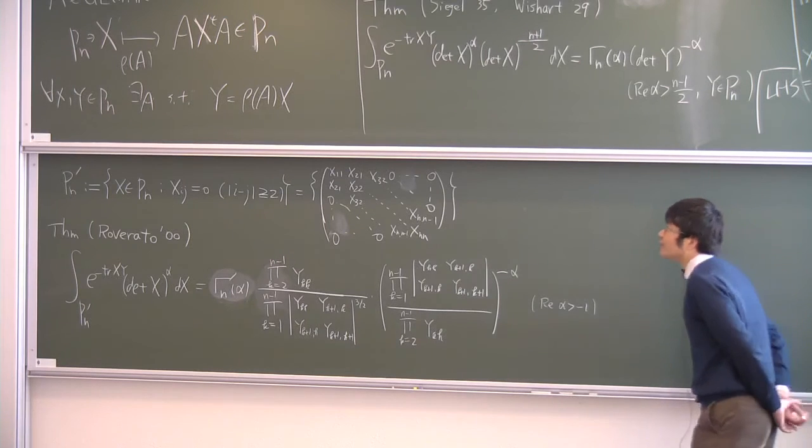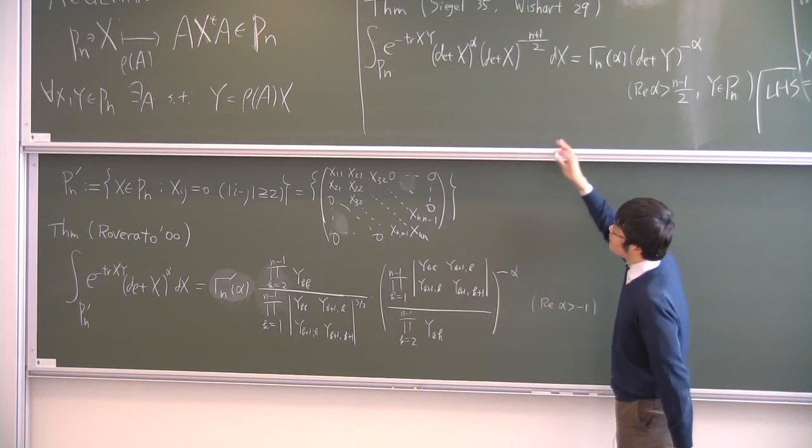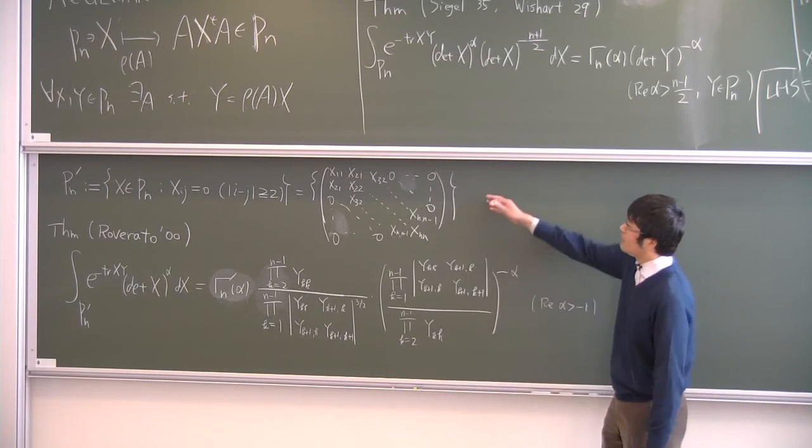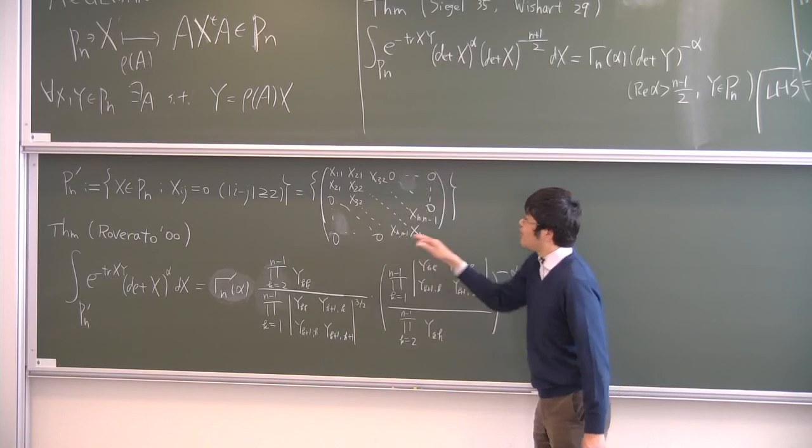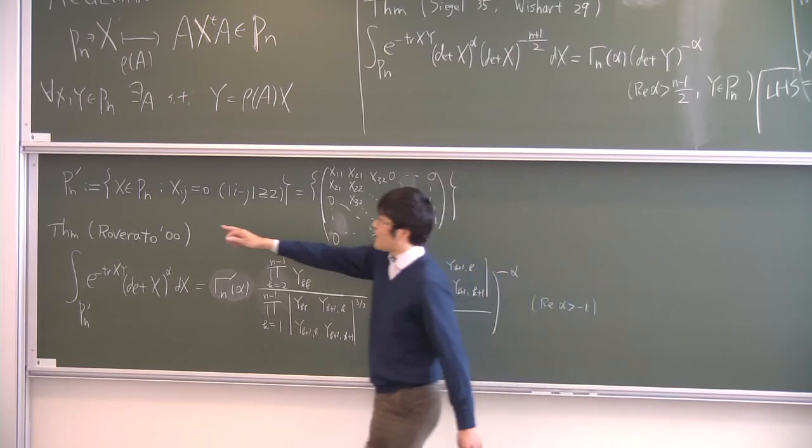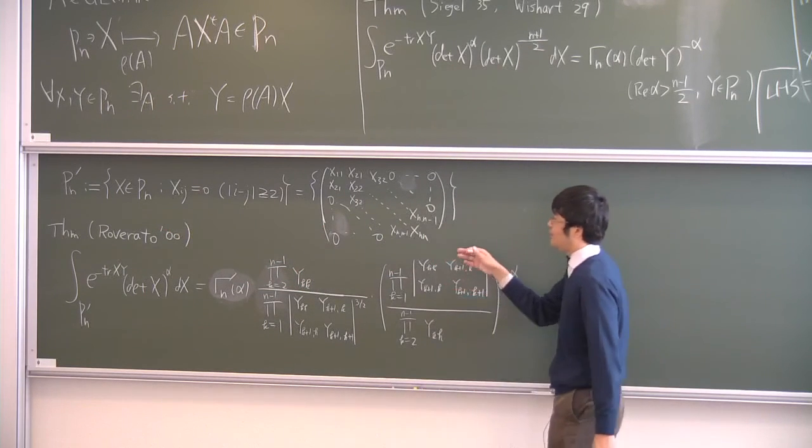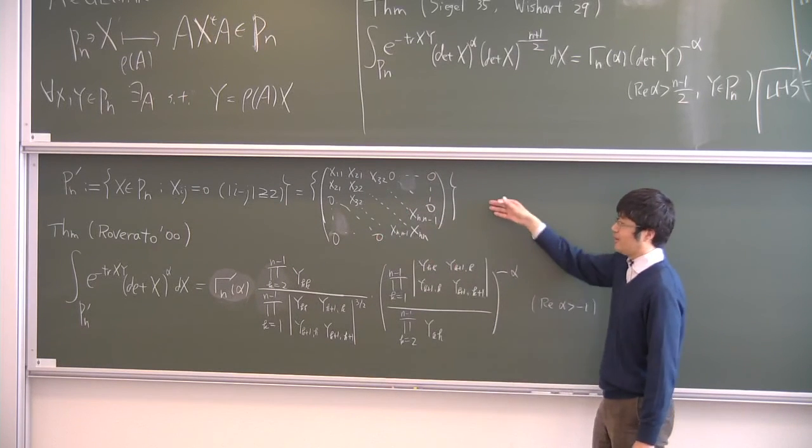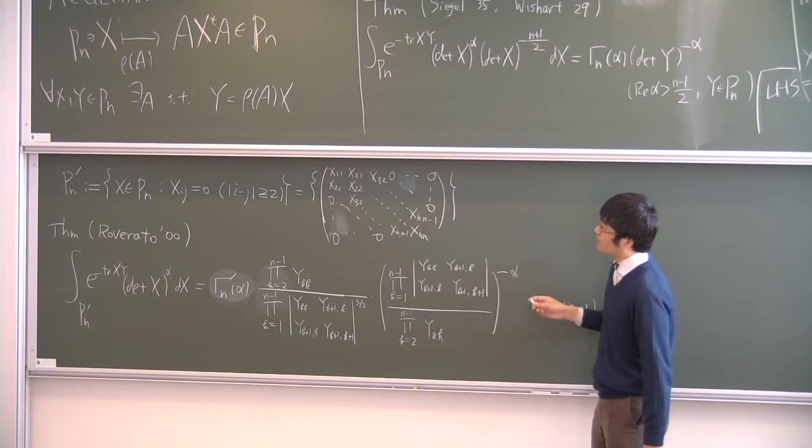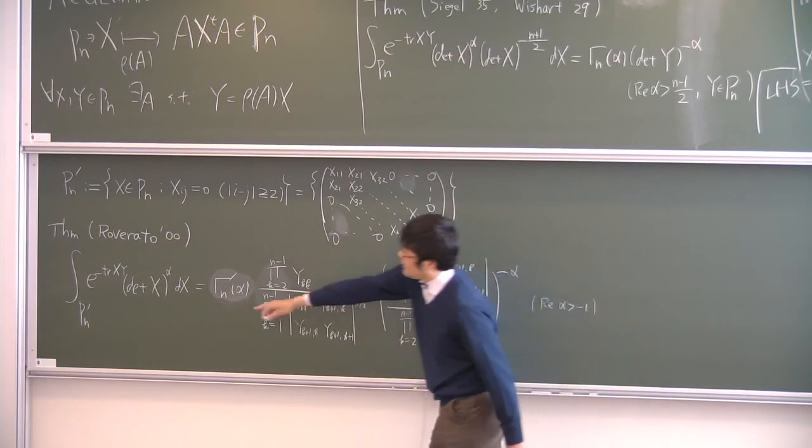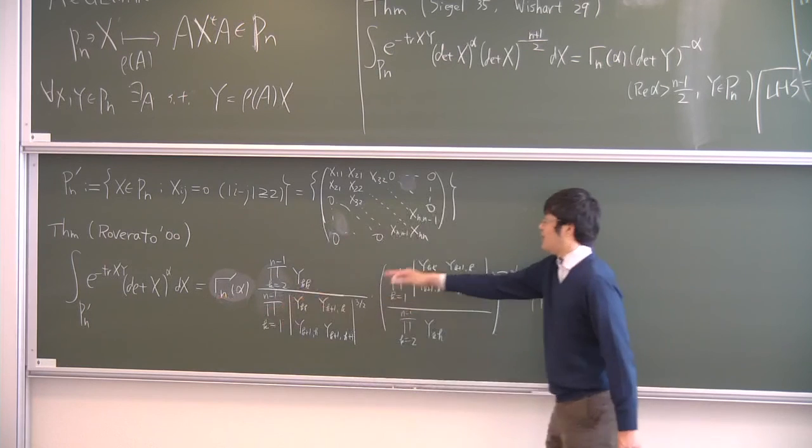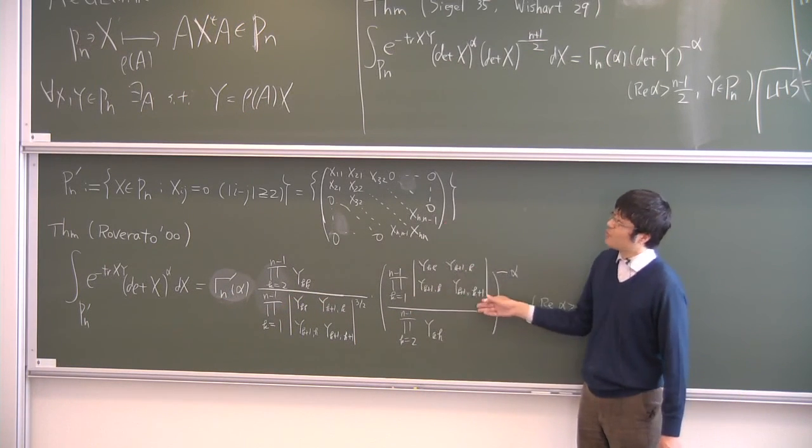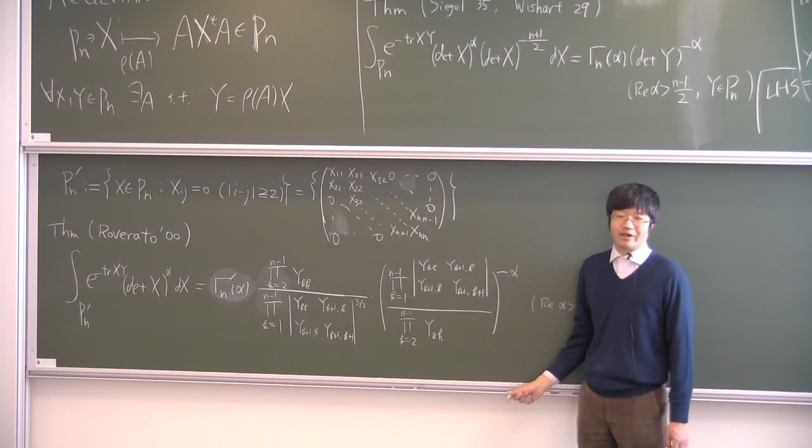Recently, the Ziegler formula is generalized to non-homogeneous cone. So like this, the P prime n is a set of positive matrices with many zeros. This example is very interesting in statistics. So the Ziegler formula is like this. So this is very complicated. But it is shown in the same spirit as Ziegler integral formula.